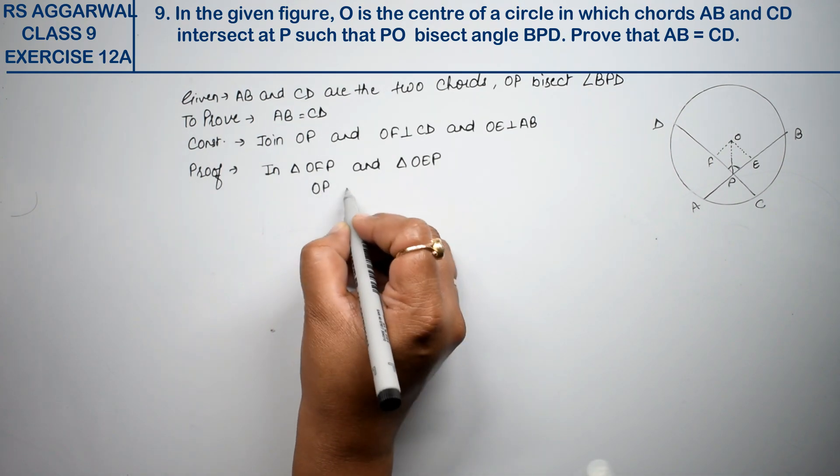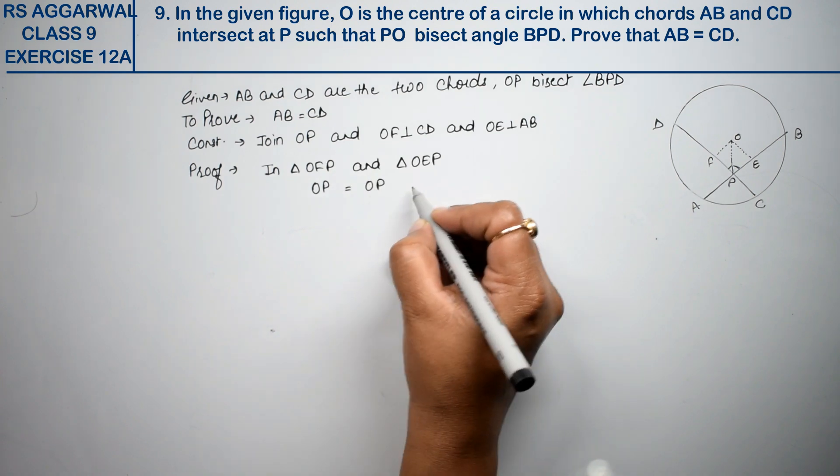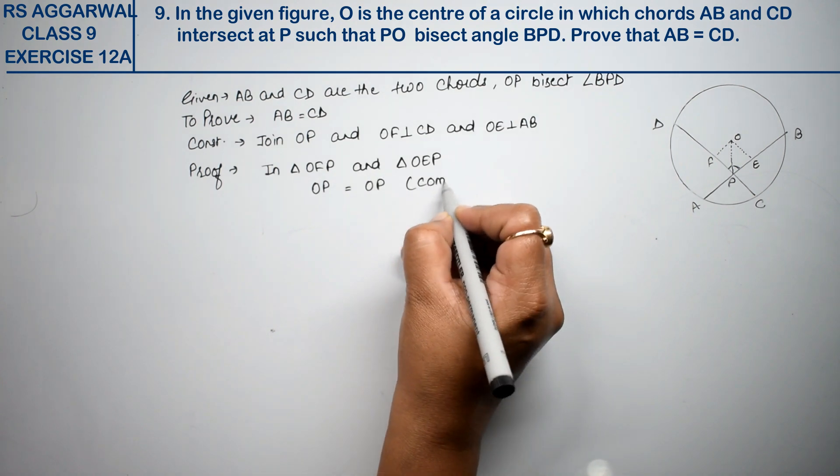OP, what is OP in both triangles? It's common. OP equals OP, common.